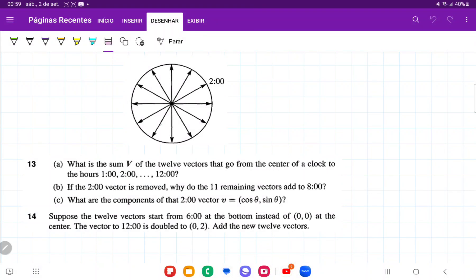So for number 13, we're given this clock, and then it asks us what is the sum v of the 12 vectors that go from the center of the clock to the hours 1, 2, 3, etc. until 12.